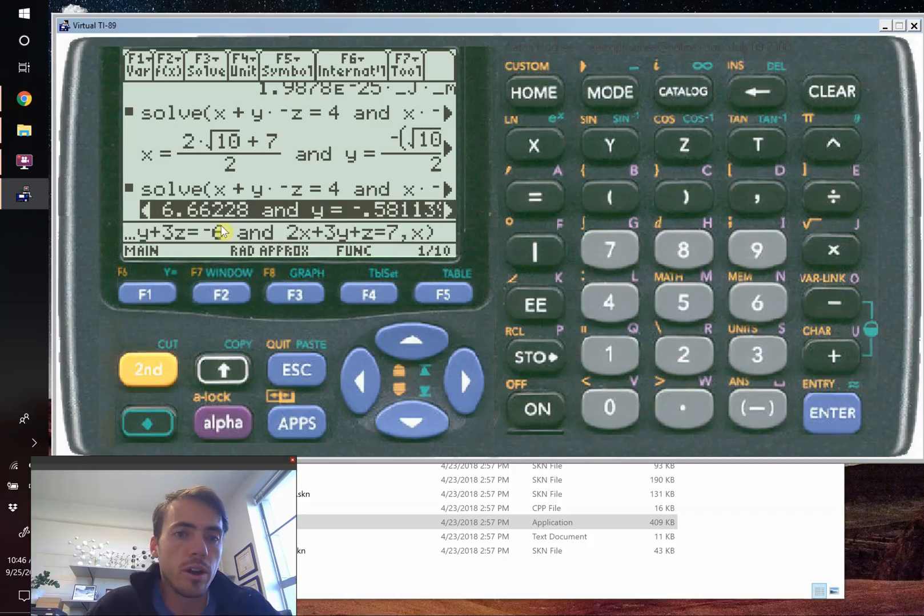So there you go. Looking up, you can see there's your value for X, for Y, and for Z.